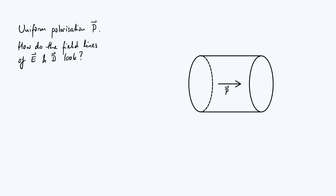While many materials will only have a non-zero polarization if you apply an external electric field to them, there are materials that have this sort of built-in polarization, and these are the materials you could use to make one of these electrets.